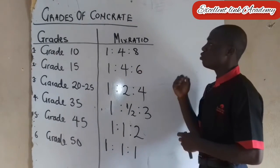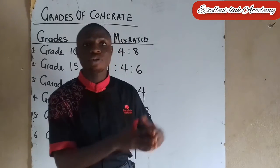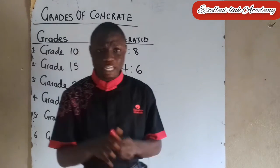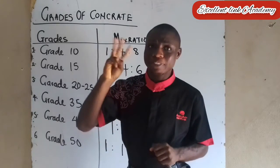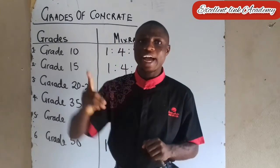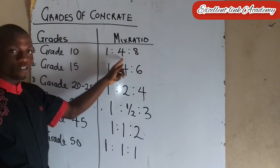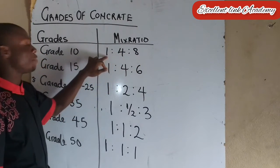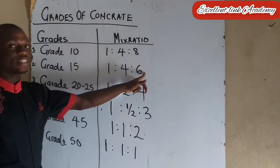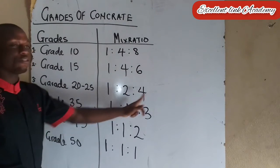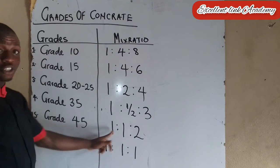We also have the mix ratio. For every grade of concrete, they all have what we call their mix ratio. In grade 15, we have 1:4:8 — this is the ratio for cement, sand, and granite. Grade 20 to 25, we have 1:2:4. Grade 25, we have 1:0.5:3. Grade 45, we have 1:1:2.